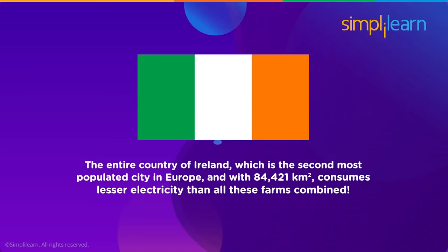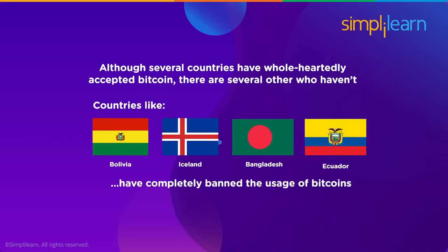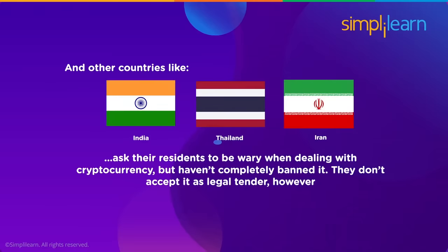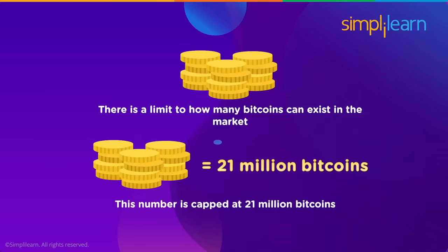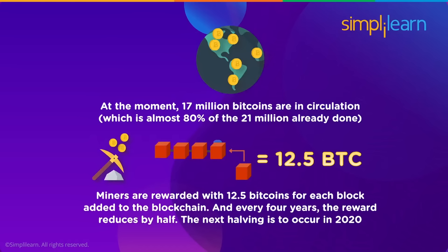Bitcoin ban: although many countries like Canada and the US have wholeheartedly accepted Bitcoin, others have not. Countries like Bolivia, Iceland, Bangladesh, and Ecuador have completely banned its usage. Iran asked residents to be careful while using cryptocurrencies but has not completely banned it, though it does not accept it as legal tender. Limited number: there is a cap of 21 million bitcoins that can ever exist. As of now, 17 million are already in circulation — that's almost 80% of the total supply.